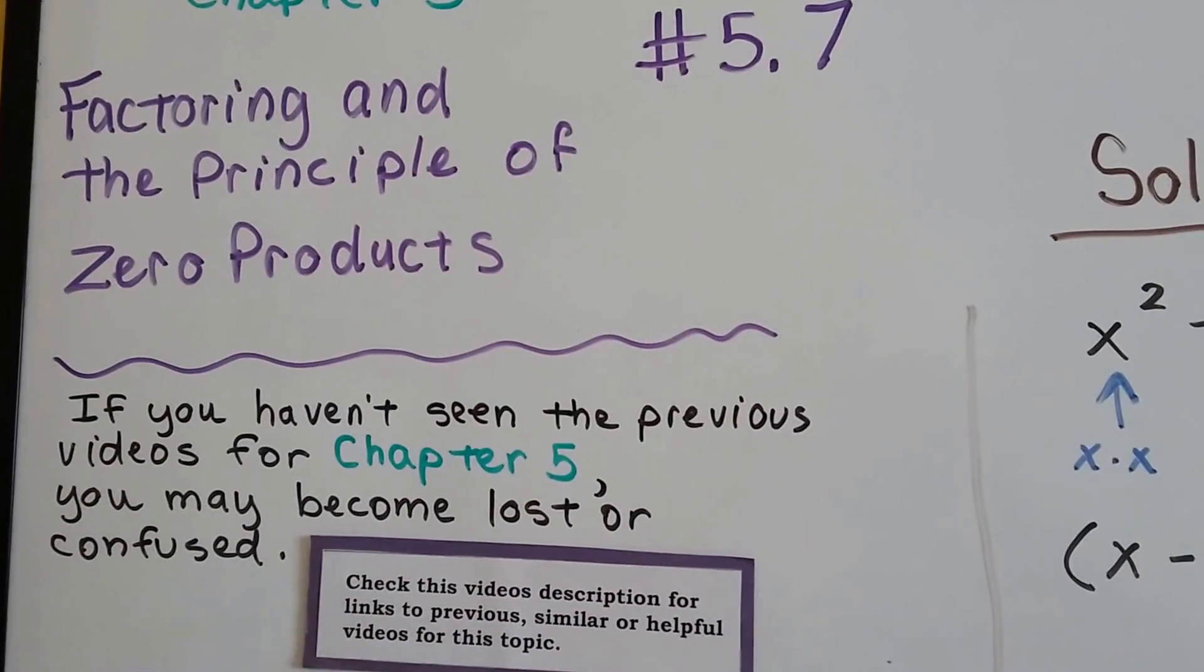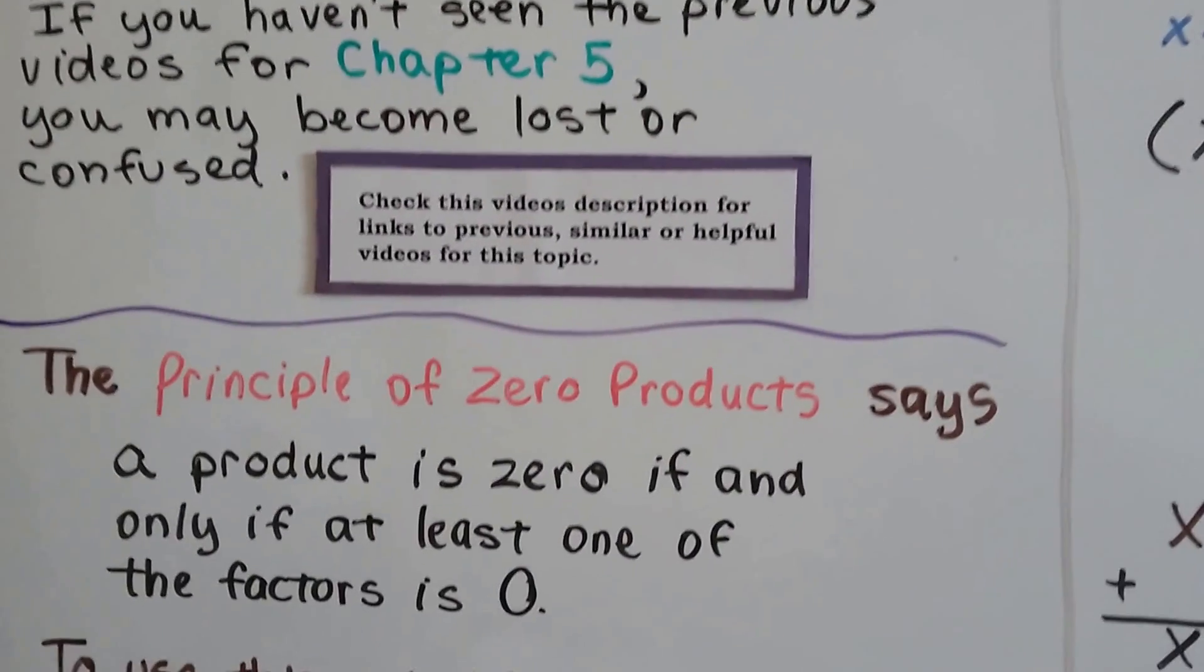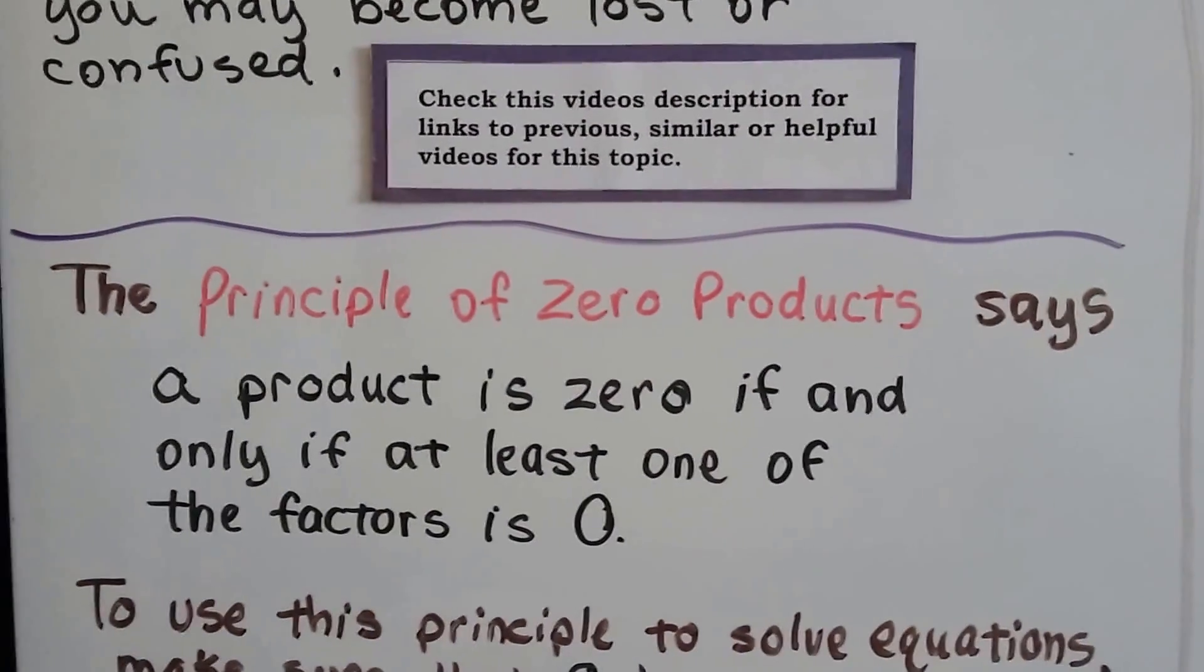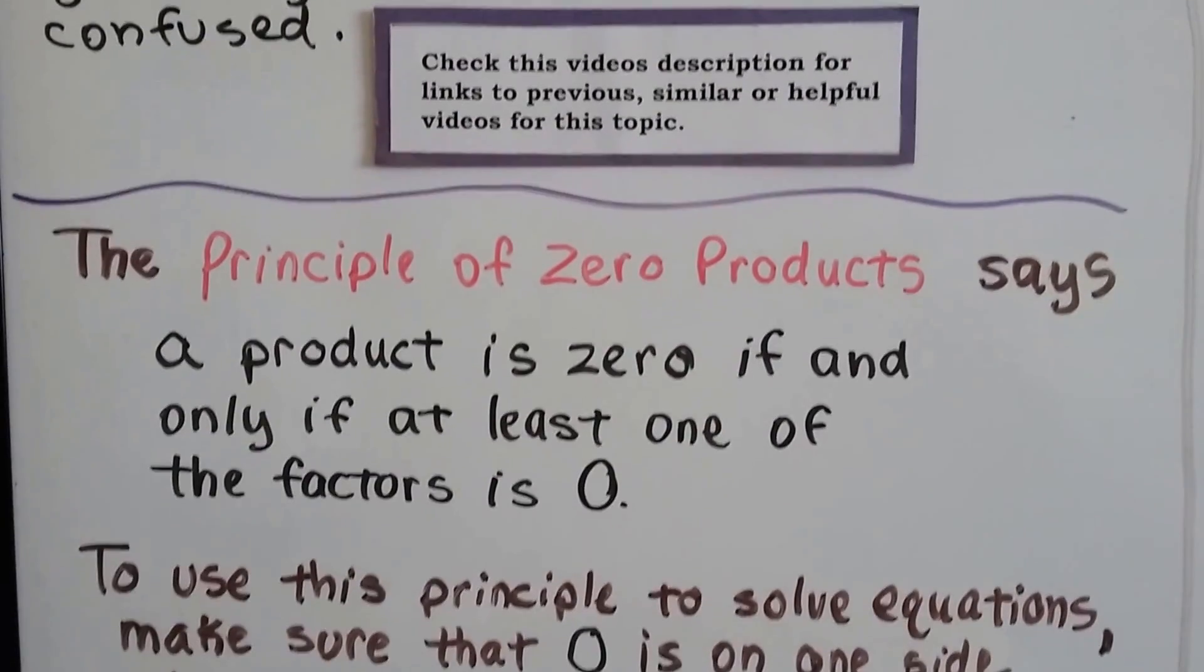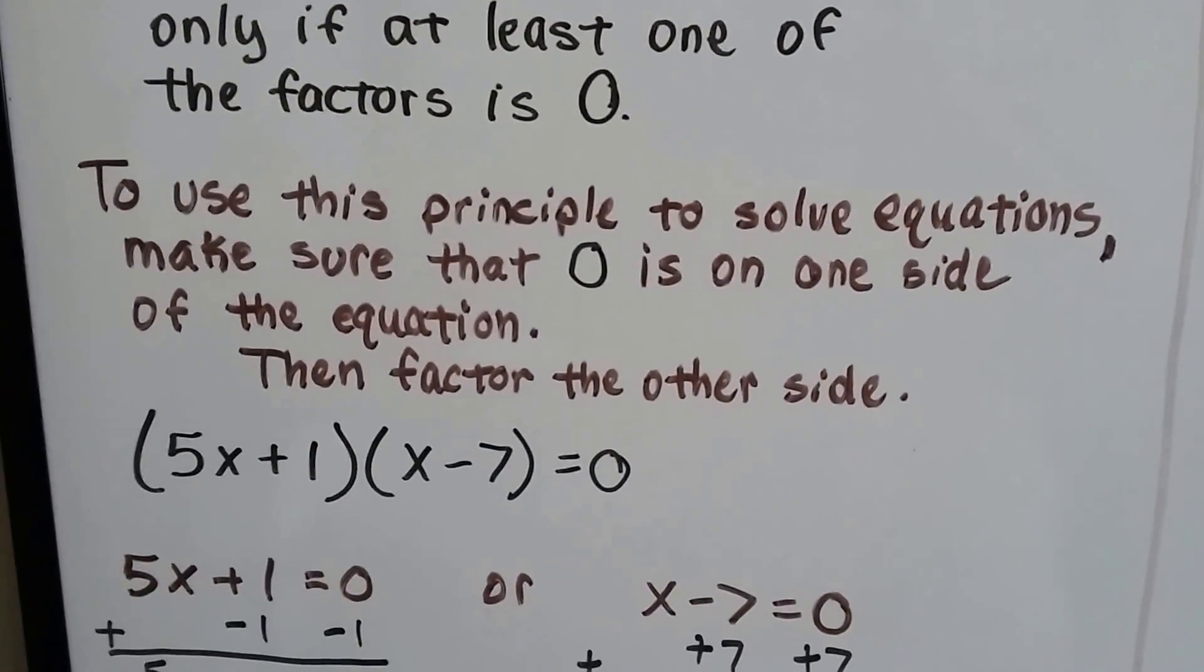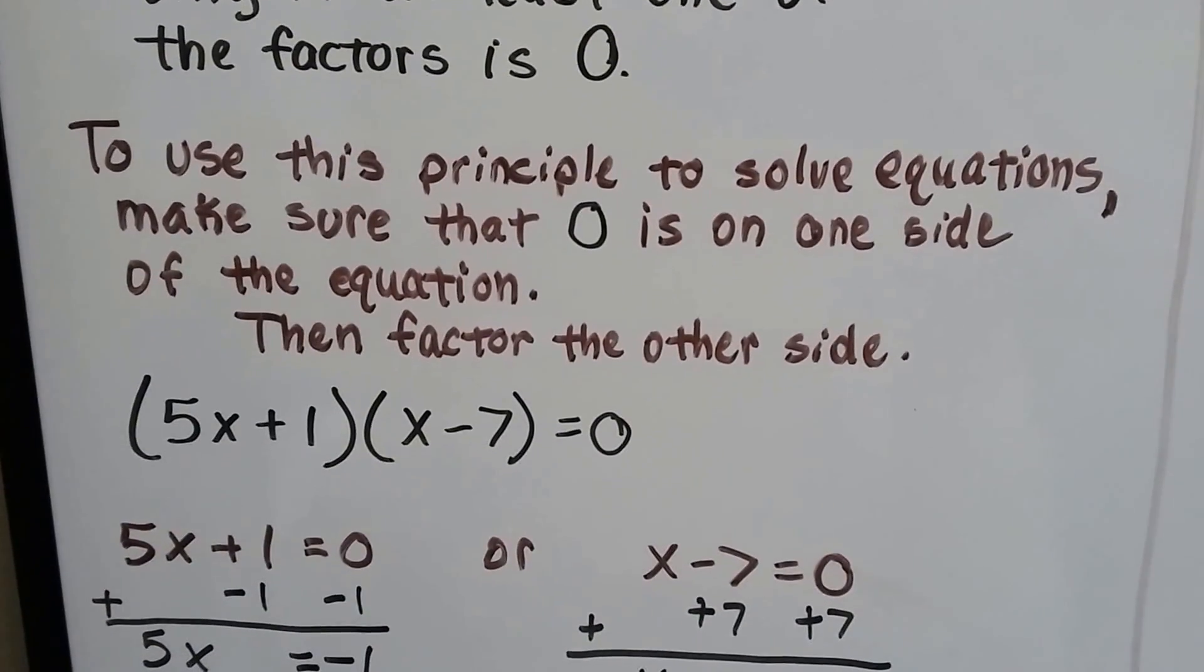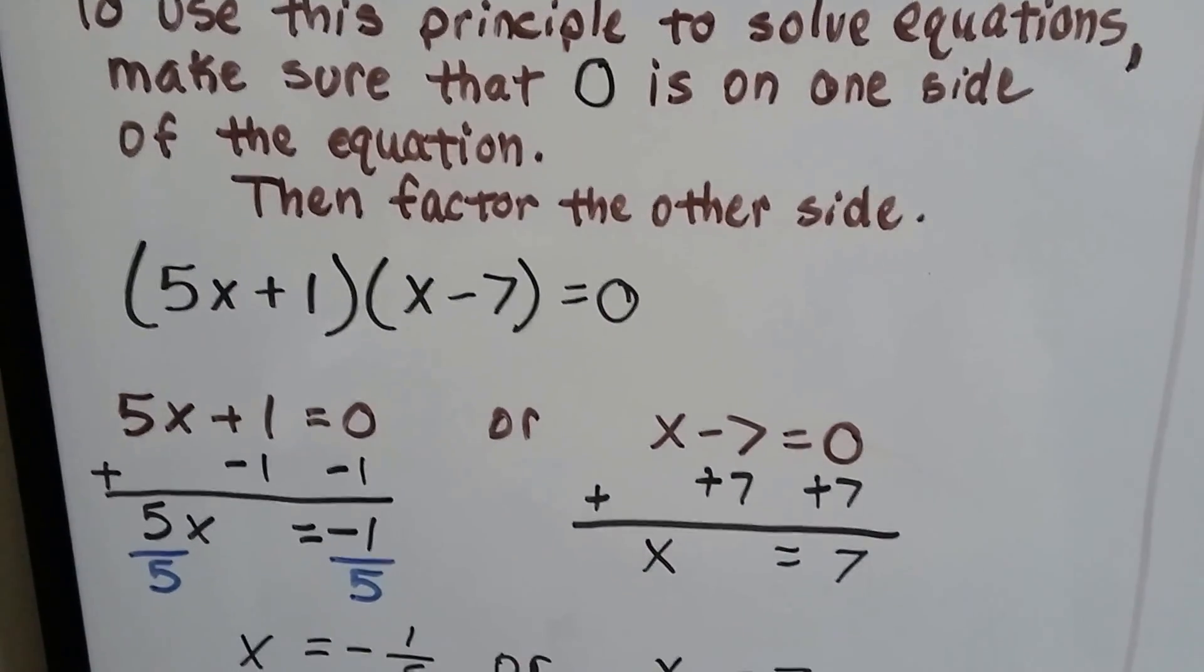We've been doing a lot of factoring lately since video 5.4a. Now we're going to talk about the principle of zero products, which says a product is zero if and only if at least one of the factors is zero. We taught this back in Algebra 1, so we're going to go over it again with factoring. To use this principle to solve equations, make sure that zero is on one side of the equation and then factor the other side.